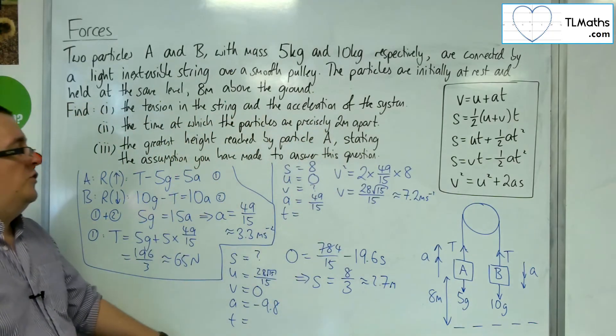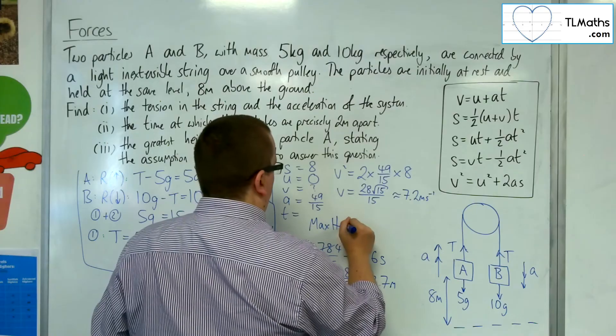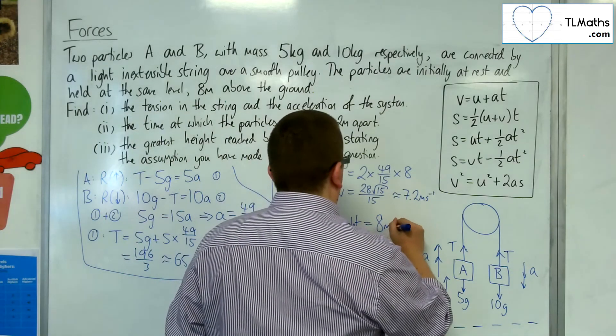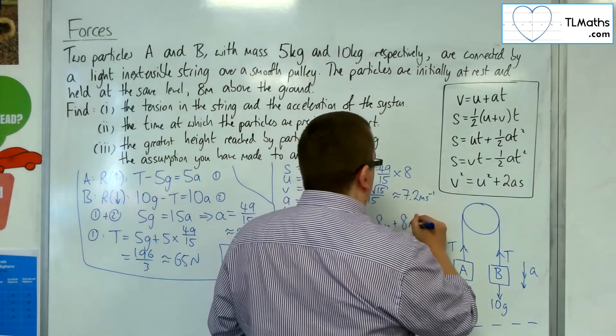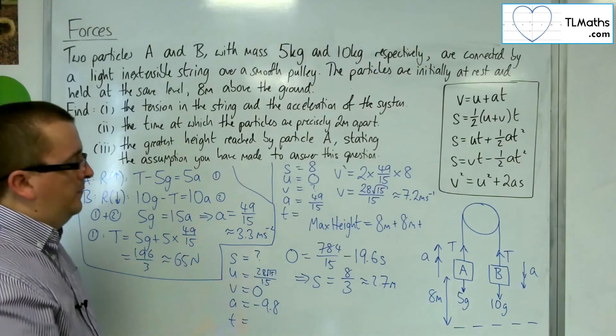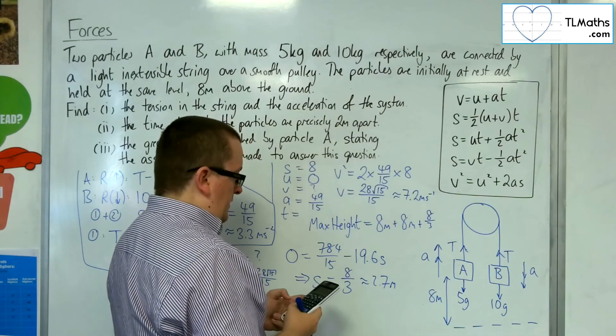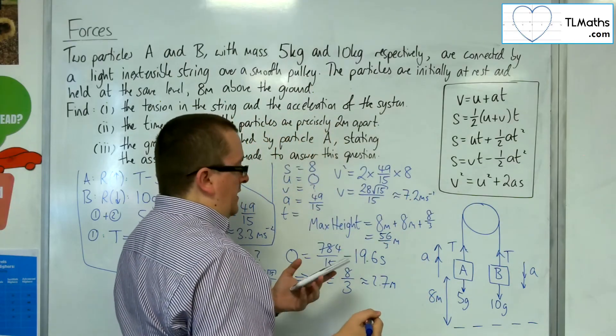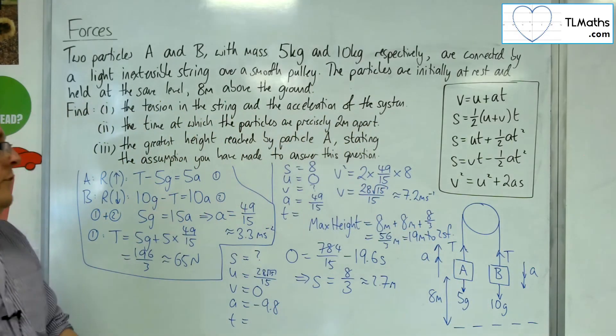approximately 2.7 metres, okay. So, what is the greatest height that A reaches? So, maximum height. Well, it starts off 8 metres above the ground. When B hits the ground, A is another 8, has travelled another 8 metres. And then, A is flying up under its own momentum, and it travels a further 2.7 metres, so 8 thirds. So, 8 plus 8 plus 8 thirds is 56 thirds metres, which is 18.6666, so 19 metres to 2 sig fig. Okay, that's our final answer.